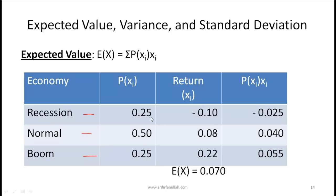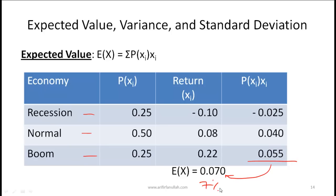You calculate the expected value by taking the probability of each state times the return in that state and summing them up. Probability of recession times return in recession gives -0.025, plus probability of normal times 0.08 gives 0.04, plus probability of boom times 0.22 gives 0.05. Adding these up gives 0.07, so the expected return is 7%.